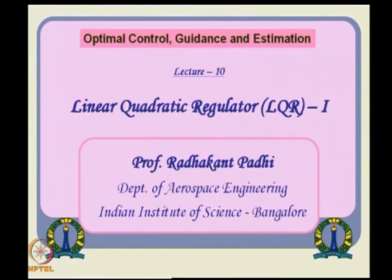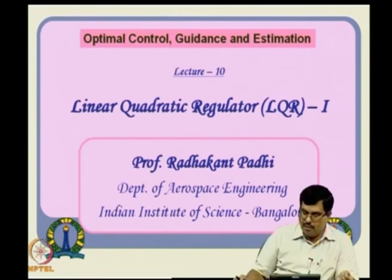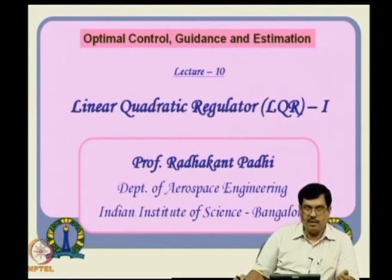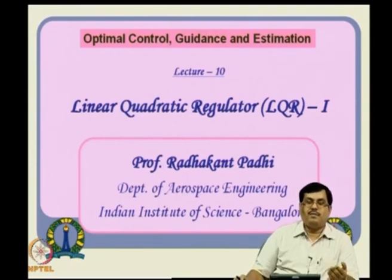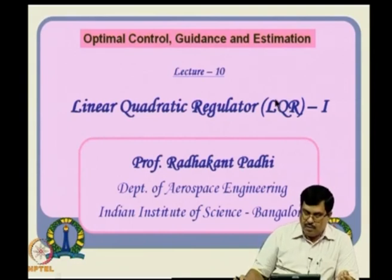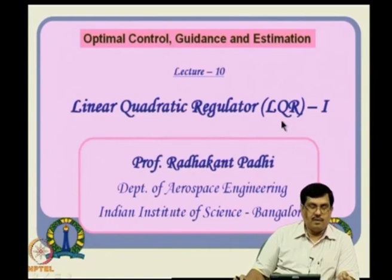Any optimal control formulation leads to two-point boundary value problems, which requires a lot of numerically intensive procedures. So in the early 1950s and 60s, people started thinking: is there any class of problems for which we do not really need all those numerical techniques, and we can get solutions in a rather computationally efficient way, even though it is limited to a class of problems? That leads to the definition of linear quadratic regulator problems, which are extensively studied and extensively utilized.